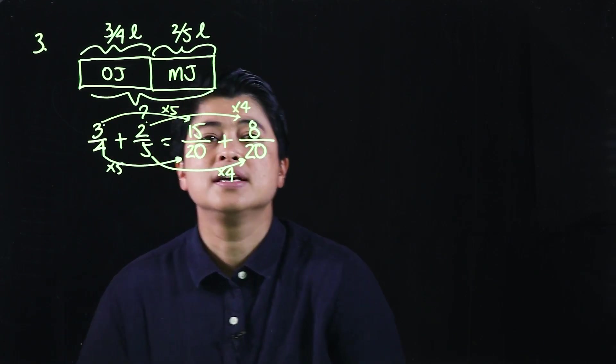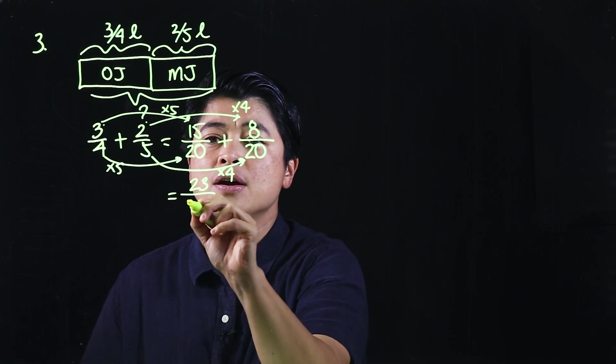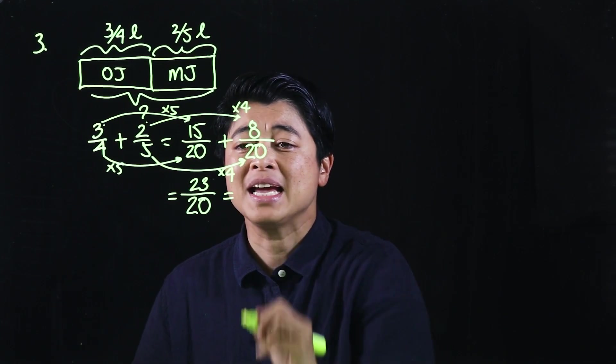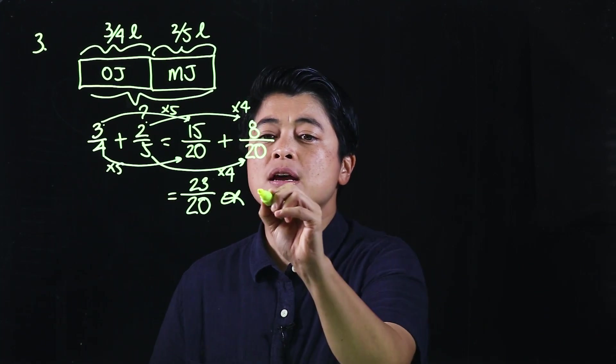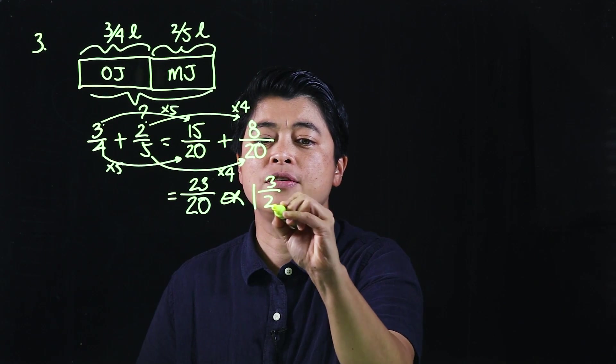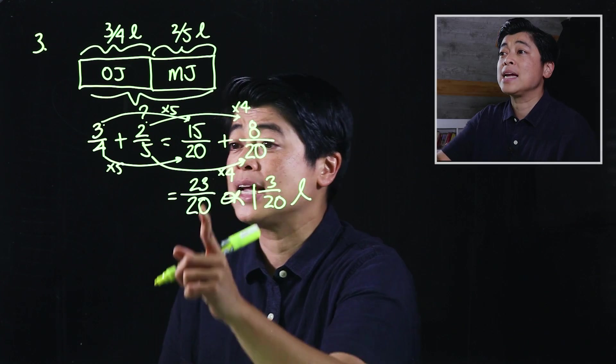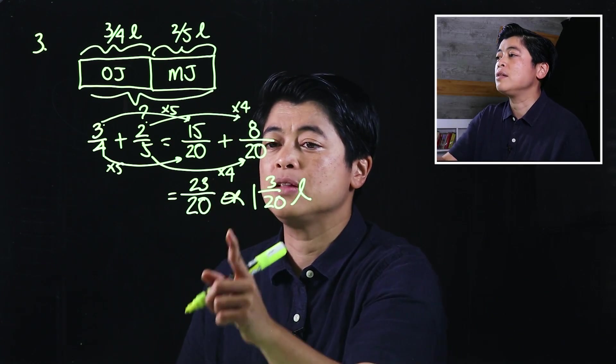So which means if we put it together that will make it 23 over 20, and that will be in mixed number equal to one whole and three over 20th liters. Again, if the kids cannot see, then that means we have to divide, and when we divide we will get one remainder three.